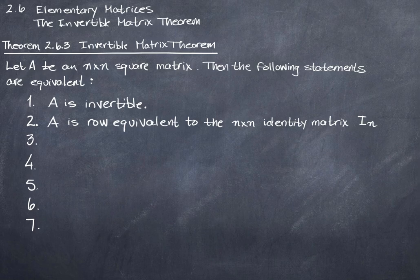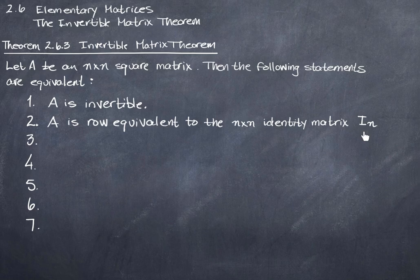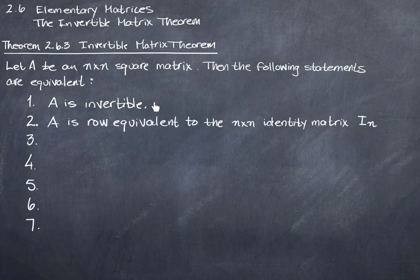The second statement is that A is row equivalent to the n by n identity matrix I sub n. If A is a square matrix and A is invertible — in other words, A has an inverse — then we automatically know that I can reduce A to the identity matrix I sub n. And conversely, if I find that I can reduce A to the identity matrix, then I know it will have an inverse. If one of these statements is true, then the other is also true.